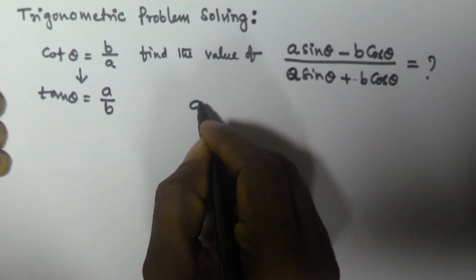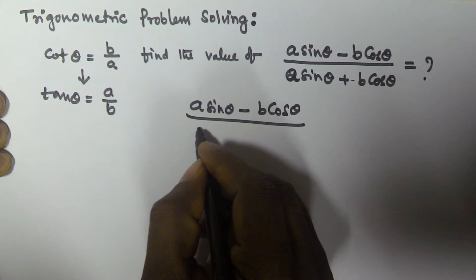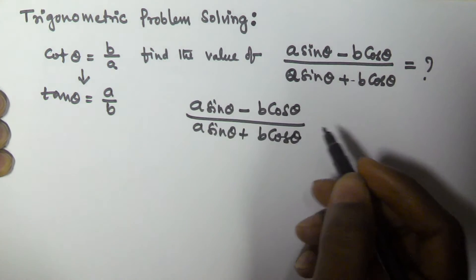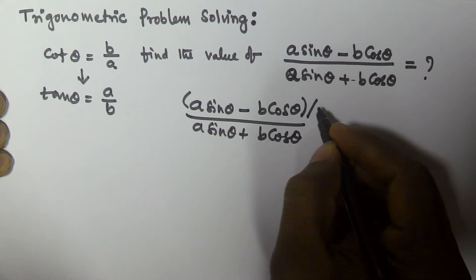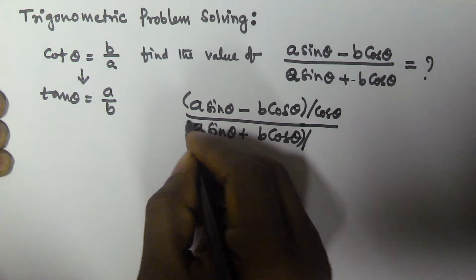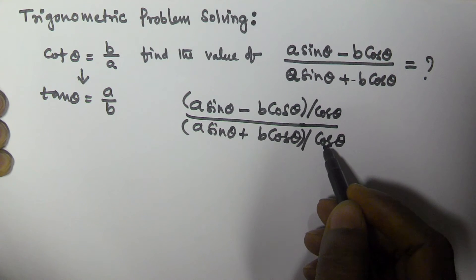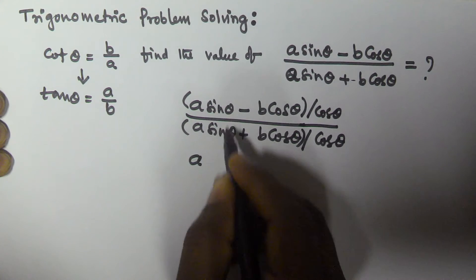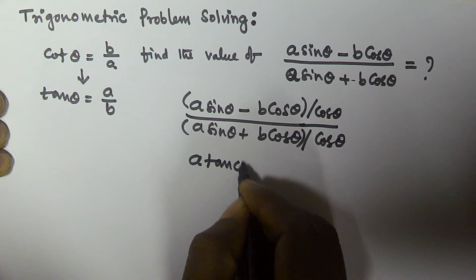We have a sin theta minus b cos theta divided by a sin theta plus b cos theta. What I will do is divide both the numerator and the denominator by cos theta. When we divide by cos theta, sin theta by cos theta becomes tan theta, so we get a tan theta minus b.